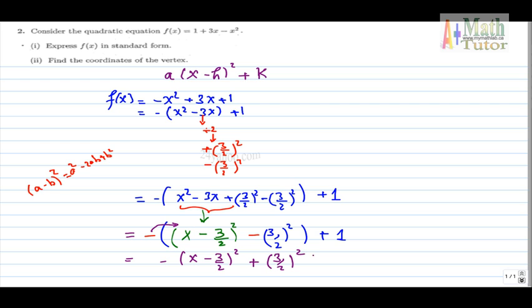And then another plus for the 1. You add these constants up, it's 9 over 4 plus 1, and the function becomes minus into x minus 3 over 2 squared plus 13 over 4.